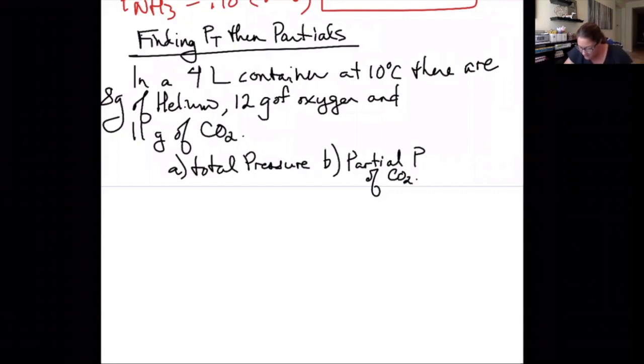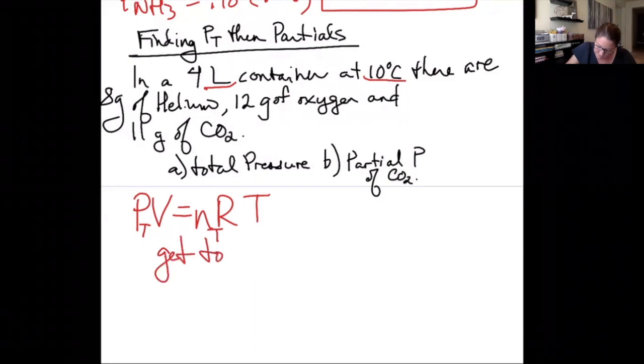You can see that we have a problem here where we're given temperature and volume. We are going to get the total pressure from PV equals NRT. But if I want to get the total pressure, what I need to plug in are the total moles. So I need to get total moles, which I would need to do anyway for partial pressures.